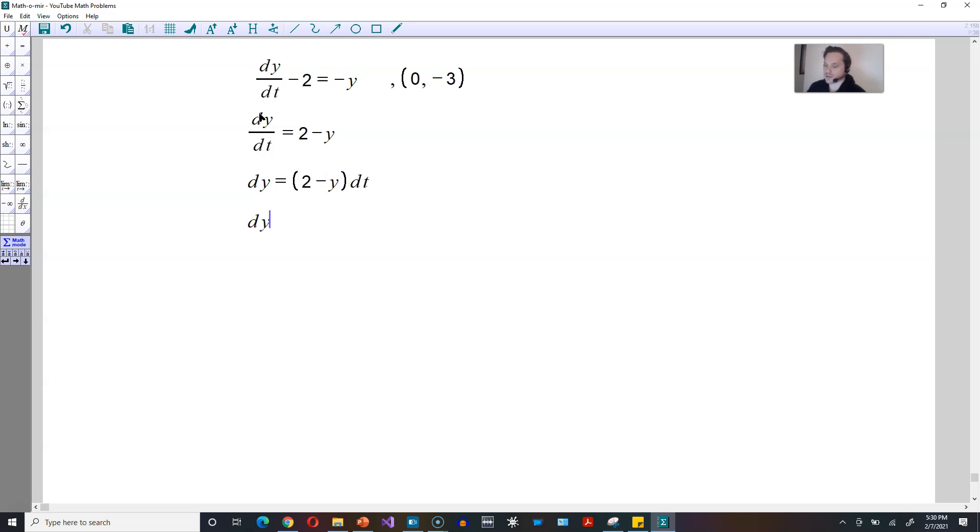And then you divide both sides by 2 - y, so it's going to give you dy divided by 2 - y is equal to dt. And then from here, this anti-differentiates. So dy over 2 - y is equal to the following on the right side, anti-derivative of just dt.